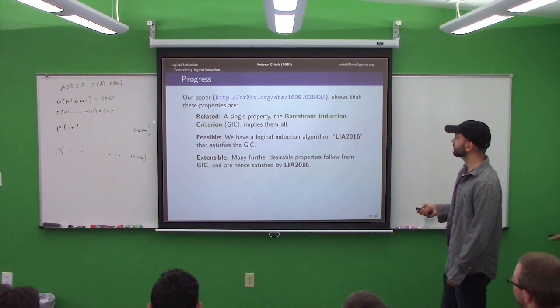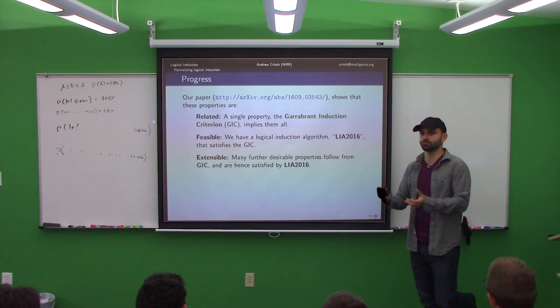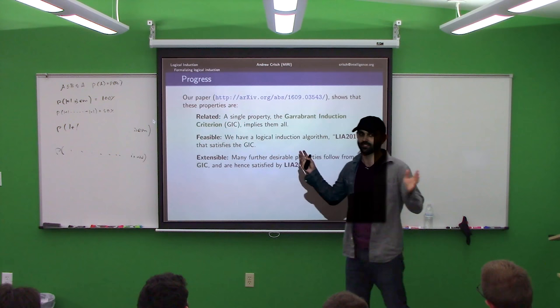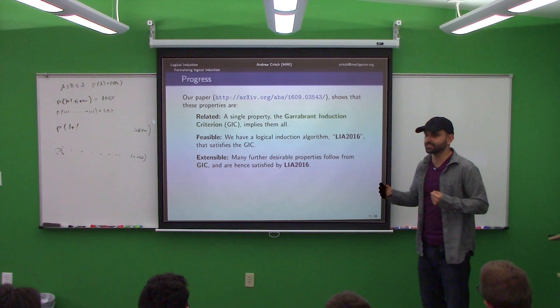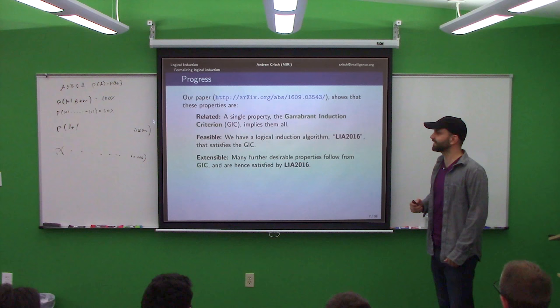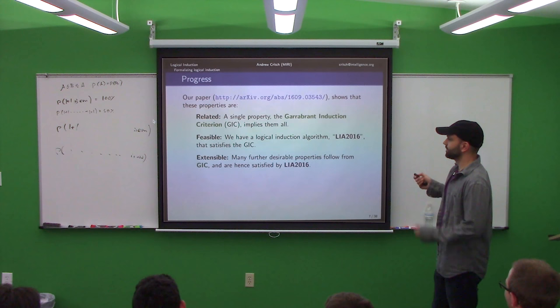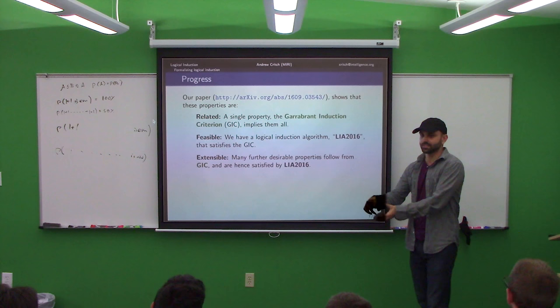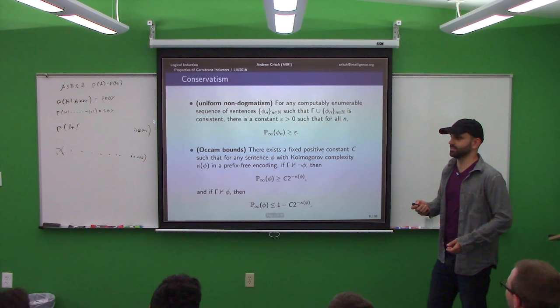We have an algorithm. It does all those particular things, and the way it does them is through this single bottleneck property — the Garibrandt induction criterion — which implies all five nice properties. The paper shows those are all feasible, and moreover there's a bunch of other properties that come from this same criterion, which I'll now discuss. I could tell you what the algorithm is, but unless it has nice properties, who cares what it does? So let me tell you some properties it has.